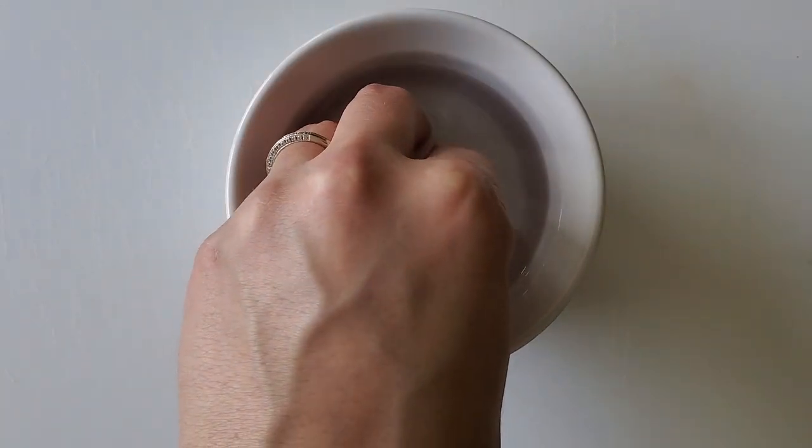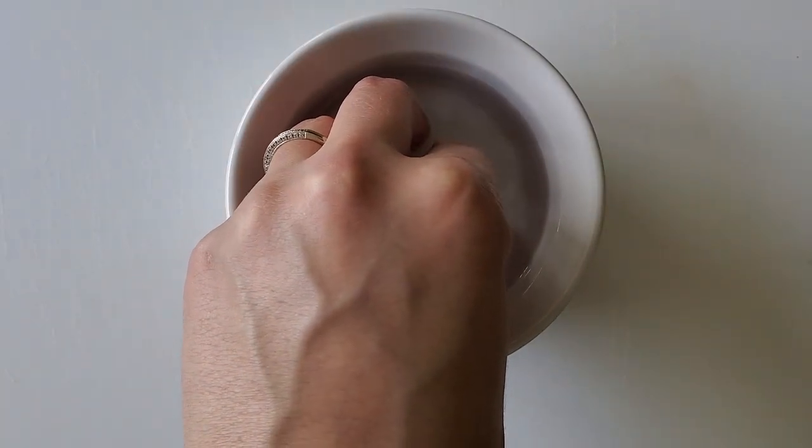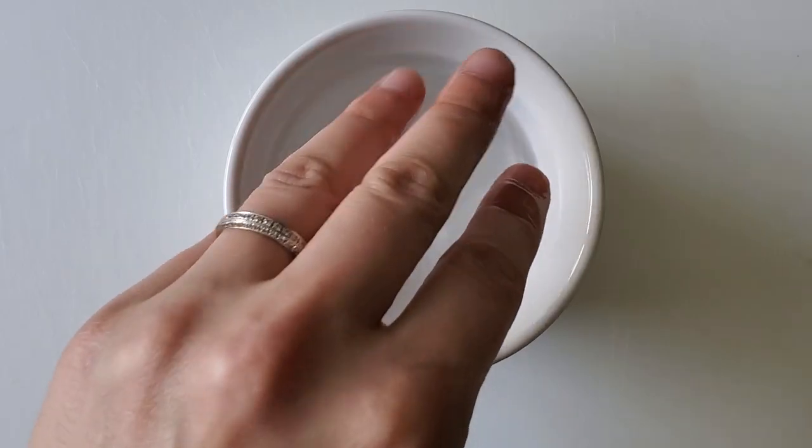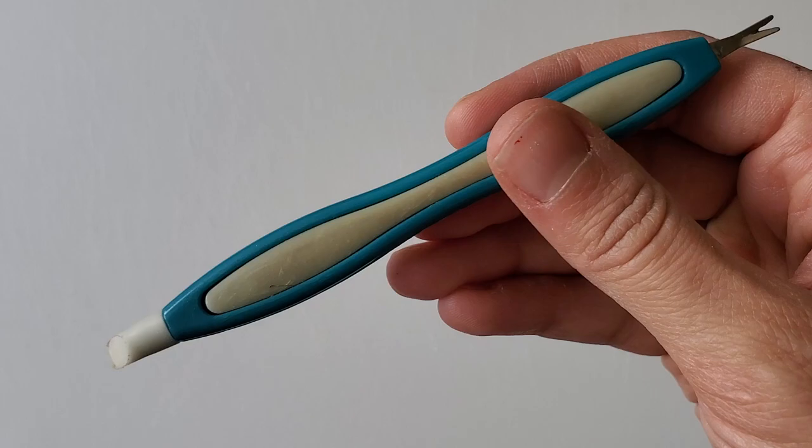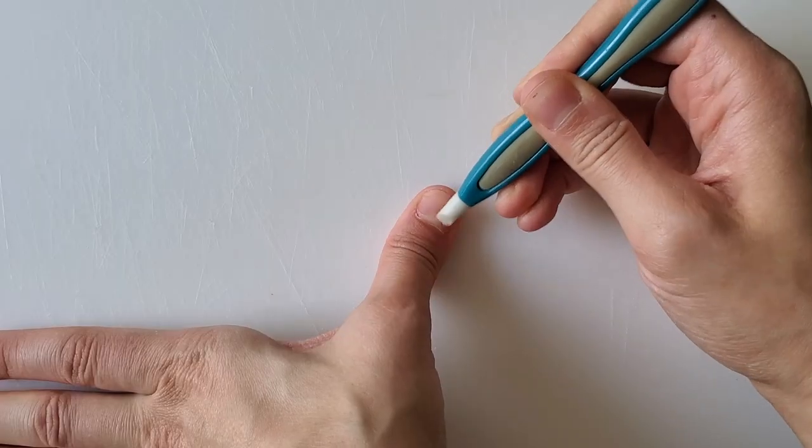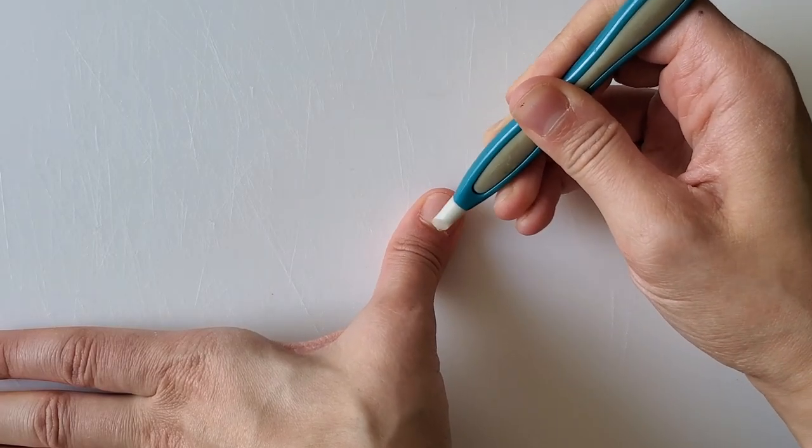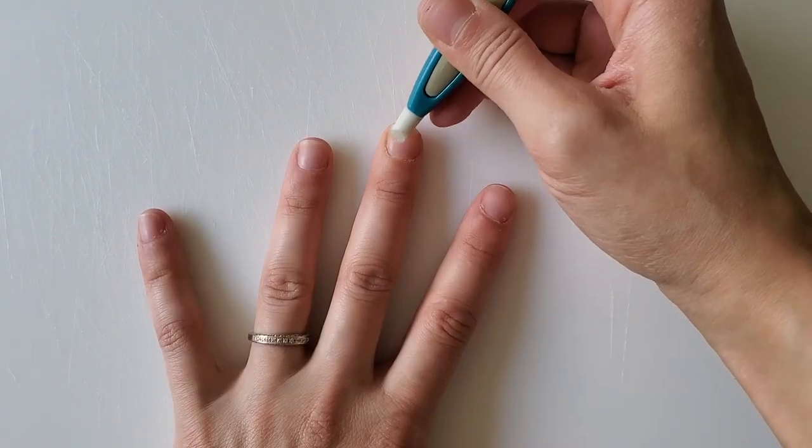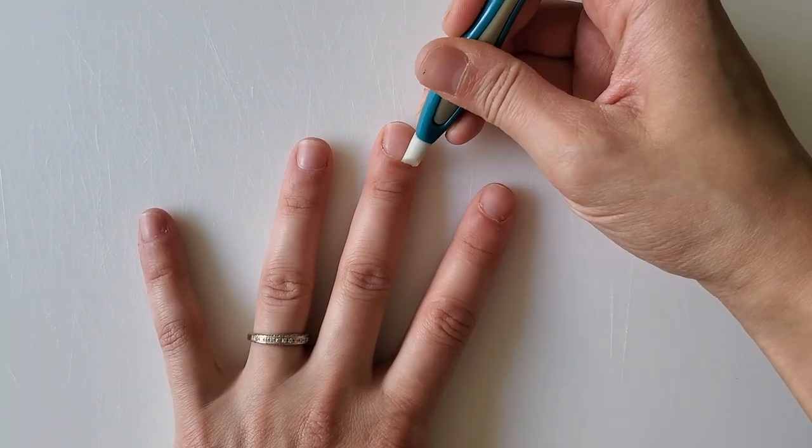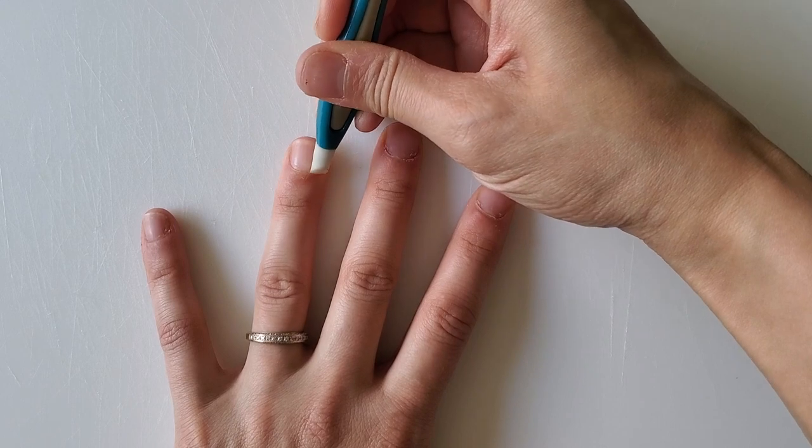First thing I'm gonna do is make sure that my cuticles are nice and soft so I'm able to cut them by putting them in some water because these nail beds ain't big enough for the two of us. Next I'm gonna take my cuticle pusher and I'm going to start pushing my crazy cuticles back one by one. This is really important because once you push them back, then you'll be able to cut them.